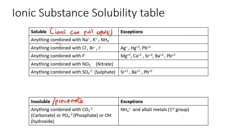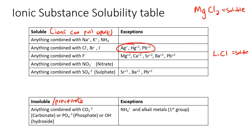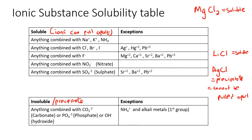Anything combined with Cl⁻ is soluble — for example, MgCl₂ would be soluble. But there are some exceptions. If it's combined with Ag⁺, for example AgCl, then it would actually form a precipitate. So anything combined with Cl⁻ is soluble, except when it's with Ag⁺.